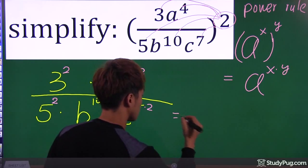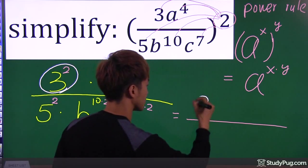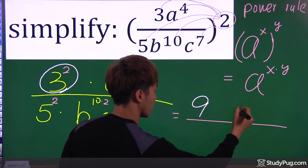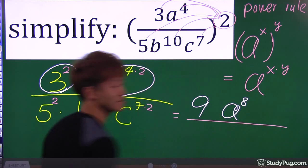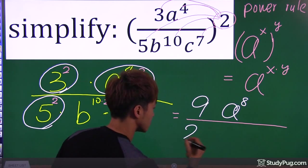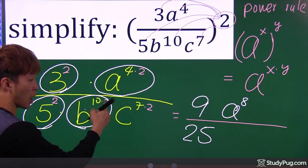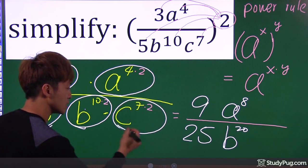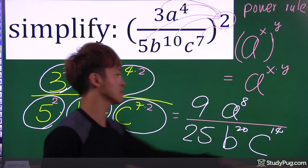Now we're ready to get the final answer. 3 squared gives us 9. Now a to the power of 4 times 2 is 8, so we have a to the power of 8. The numerator is done. Let's look at the denominator. We have 5 squared, which is 25. We have b to the power of 10 times 2, so that's b to the power of 20. c to the power of 7 times 2, which is 14, so c to the power of 14. And that is the final answer.